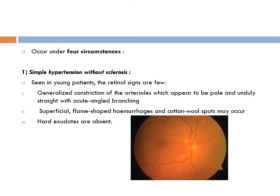There are four clinical categories to consider. First: simple hypertension without sclerosis — seen in young patients with temporary stress and episodic hypertension. These patients are young, so their arterioles are healthy and not damaged by previous sclerosis. Their temporary blood pressure elevation results in simple hypertension without underlying sclerotic changes.